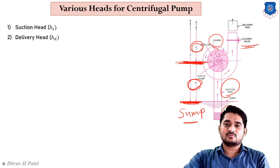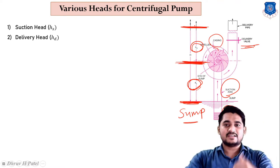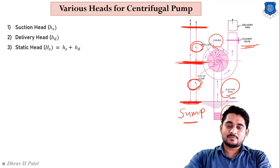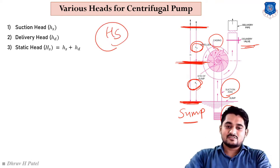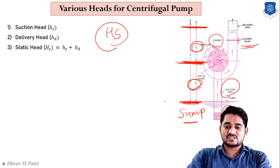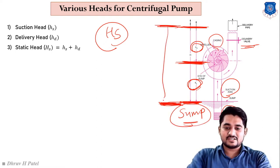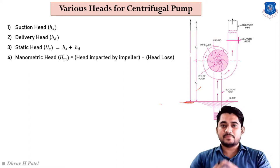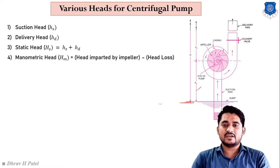Then static head, represented by capital H_s, is basically suction head plus delivery head — the summation of these two. If we take the distance from our sump level to our final destination level, that is known as static head. Next is manometric head, which is very important regarding the centrifugal pump.